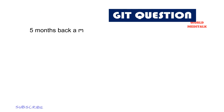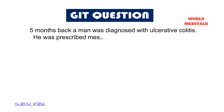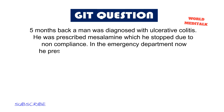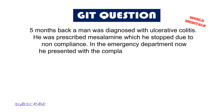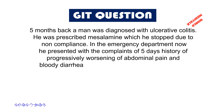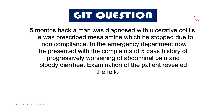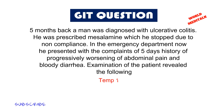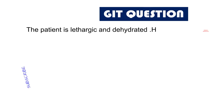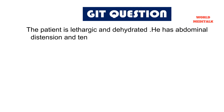Five months back, a man was diagnosed with ulcerative colitis. He was prescribed mesalamine, which he stopped due to non-compliance. He presented to the emergency department with a five-day history of progressively worsening abdominal pain and bloody diarrhea. Examination revealed the patient is lethargic and dehydrated, with abdominal distension.